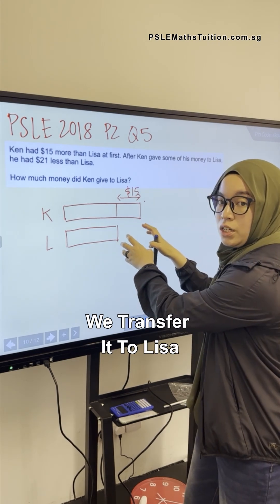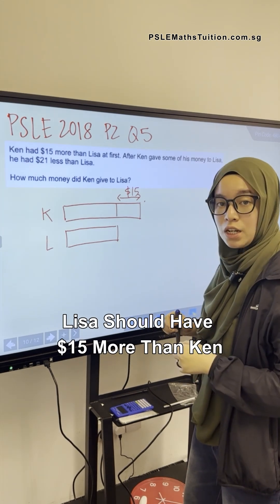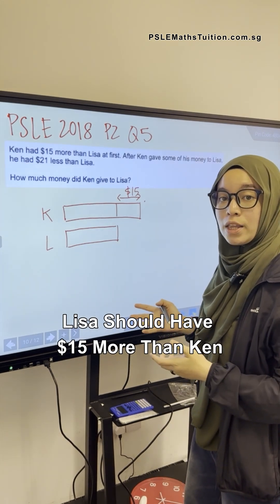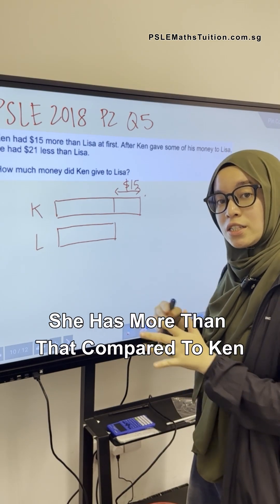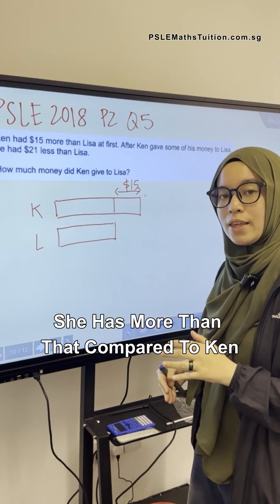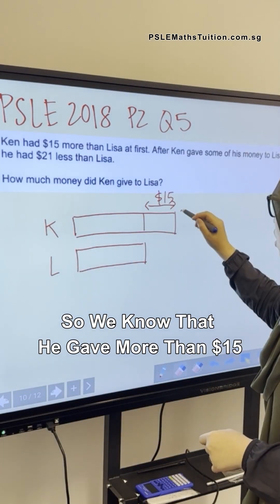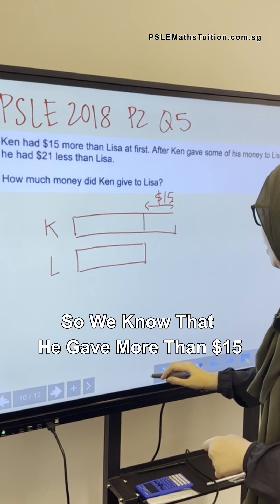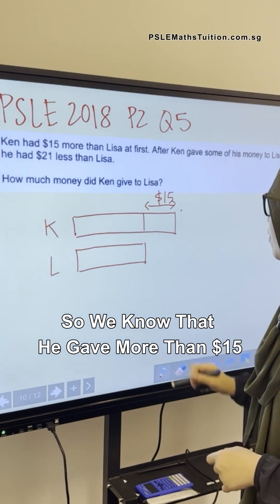we take this $15 and transfer it to Lisa, Lisa should have $15 more than Ken. But that's not what she has — she has more than that compared to Ken. So we know that he gave more than $15.